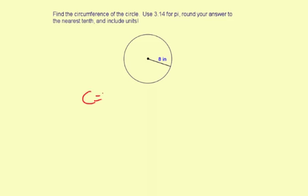The circumference of a circle is 2 times pi times the radius, and the radius is the distance from the center to the outside of the circle.